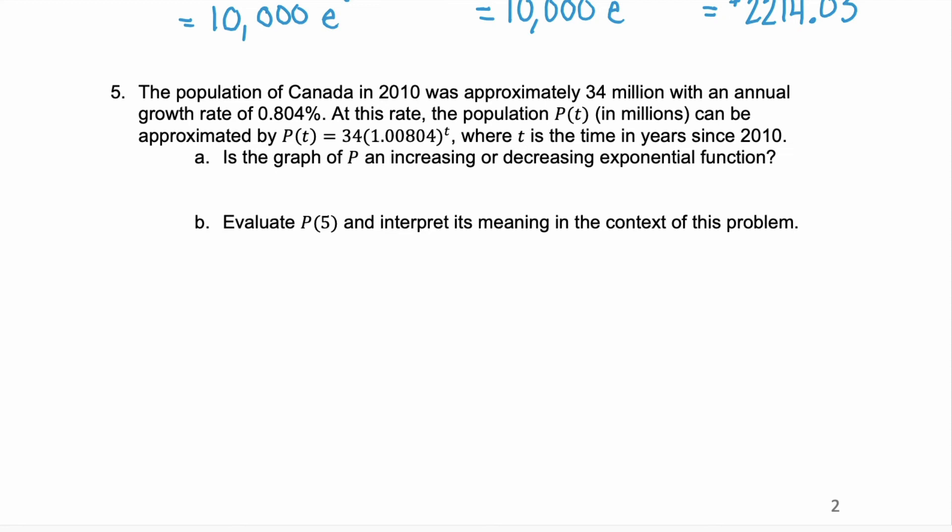Population tends to grow exponentially. In example 5, we see that the population of Canada in 2010 was approximately 34 million with an annual growth rate of 0.804%. At this rate, the population P(t) in millions can be approximated by this exponential function P(t), where t is the time in years since 2010.